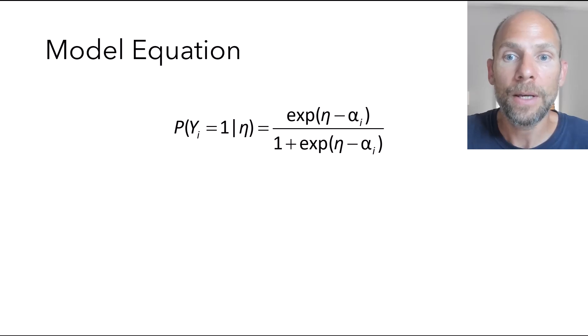But the item probabilities, excuse me, the item difficulties are fixed. So the alpha i parameters are constants that are estimated only once. And then eta is the person score that is person specific. And so these two parameters are what determine the solution probability. If the item difficulty is higher than the person ability, then you will get a probability below 0.5 of solving the item.